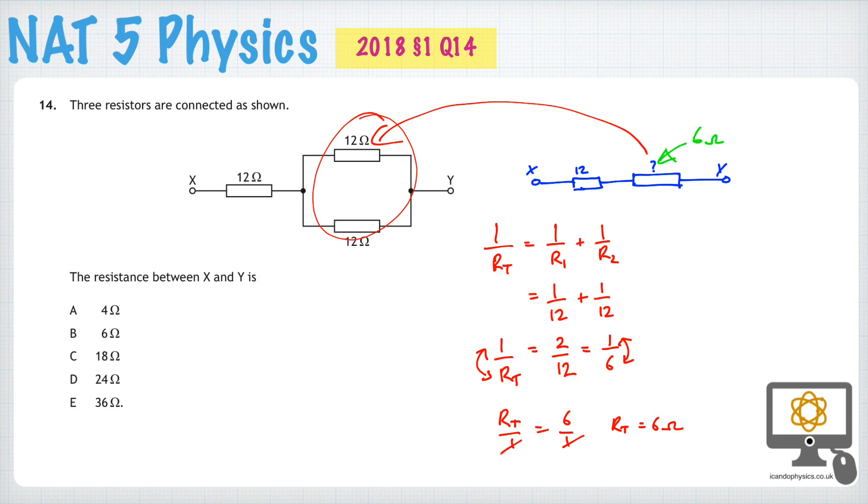And so now you can add these two simply in series together using the formula for resistors in series, which is RT is equal to R1 plus R2. And so that means RT is 12 plus 6, which means the total resistance between x and y is 18 ohms. So the answer is C.